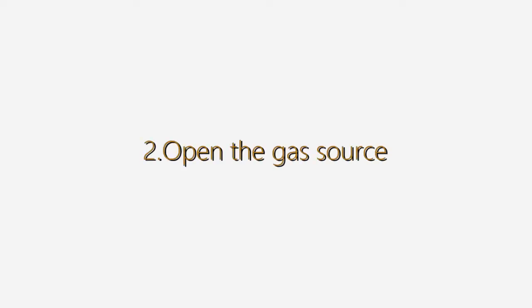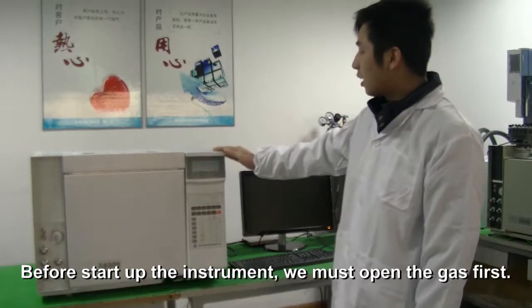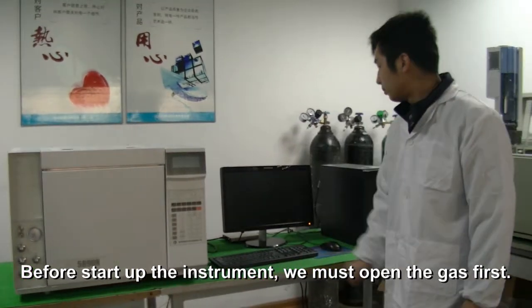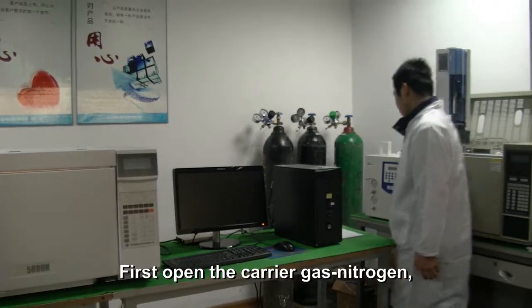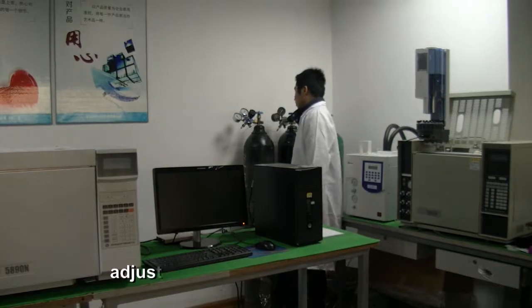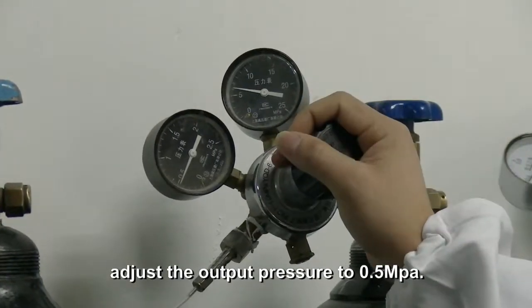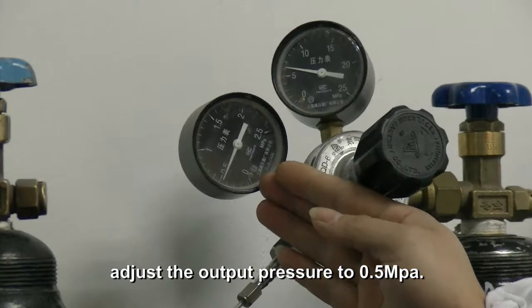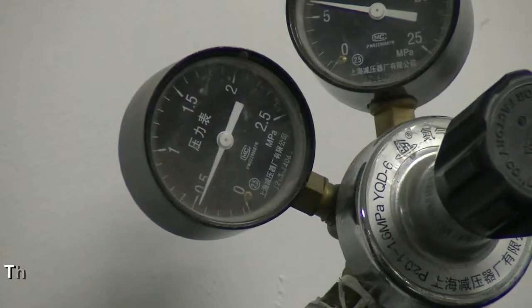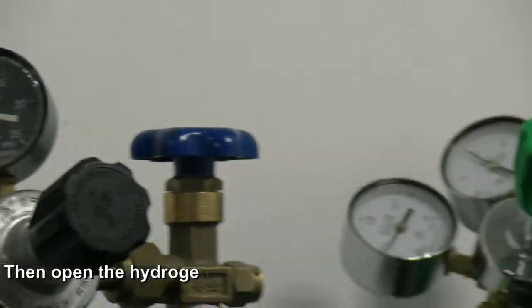To open the gas source, before starting the instrument, we must open the gas first. First, open the carrier gas nitrogen, adjust the output pressure to 0.5 MPa, then open the hydrogen, adjust the output pressure to 0.4 MPa.